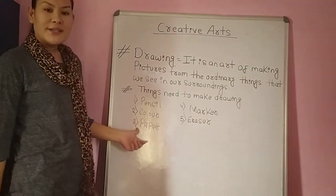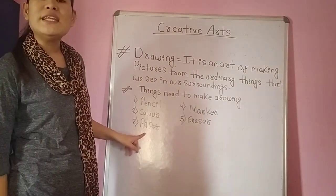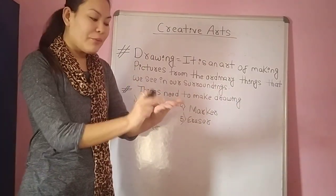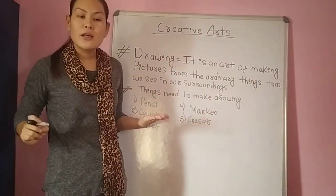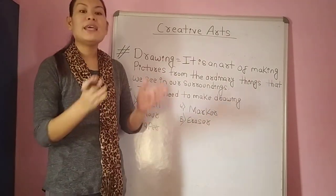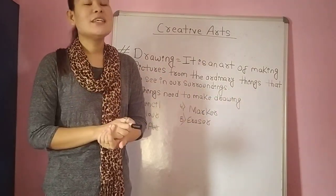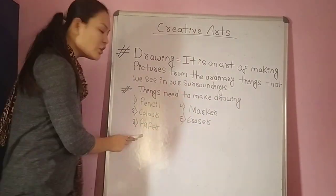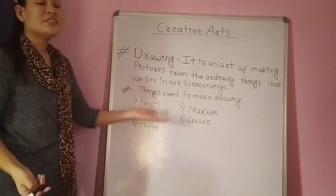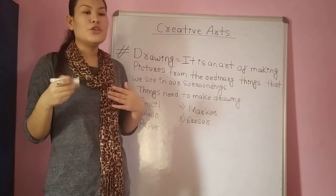The third material we need to make a drawing is paper. It is not possible to draw on our hand, so paper is a most important material. Without paper we cannot make a drawing. The fourth is marker, which is used to highlight our pictures. For example, if you make a ball with pencil, the marker is used to highlight that drawing.